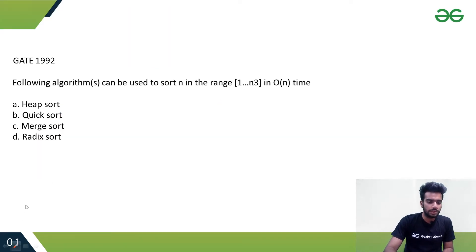Now let's see another question from GATE 1992: Following algorithm can be used to sort n elements in the range [1...n^3] in O(n) time. If you remember, only non-comparison based sorting algorithms can sort values in O(n) time.